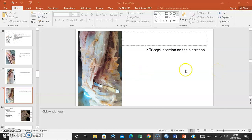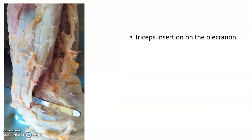So it's Dr. Ominda again. We continue with a series of the arm. What you can see in this image is the triceps brachii being inserted onto the olecranon process.